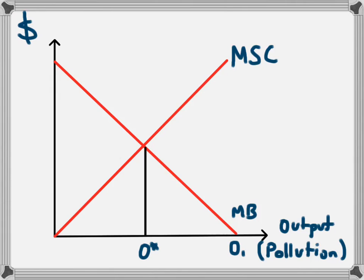Once we move beyond the O* level, the benefit that the business is receiving is much lower than the cost to society of that extra pollution, so this isn't a good place for society to be producing at. However, the business doesn't have to pay that cost, so it won't consider it. It will keep increasing its production beyond this point all the way until it gets to O1.